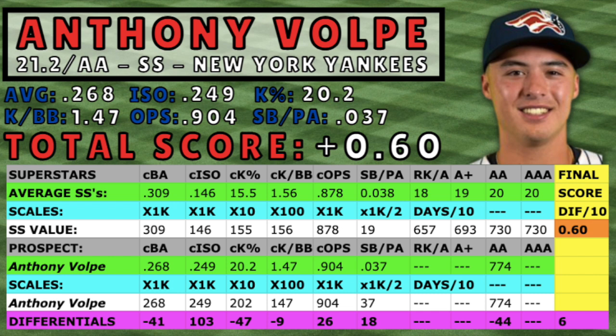Volpe took dings on his career batting average, K percentage, K-to-walk ratio, and age for level. Because of his ability to hit for power and reach base, he was awarded points for his career .249 ISO and his .904 OPS. Volpe's final score in this episode is a 0.6, which means his career numbers are a tad bit better than today's superstars.